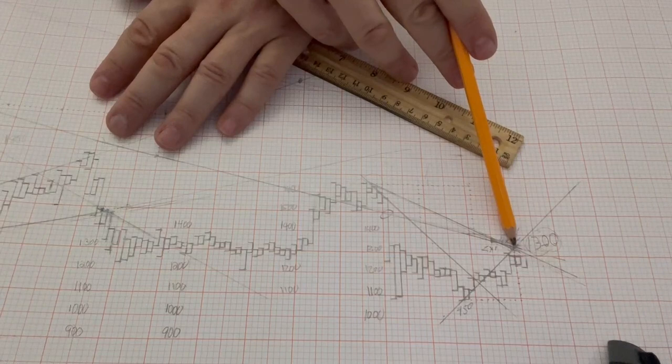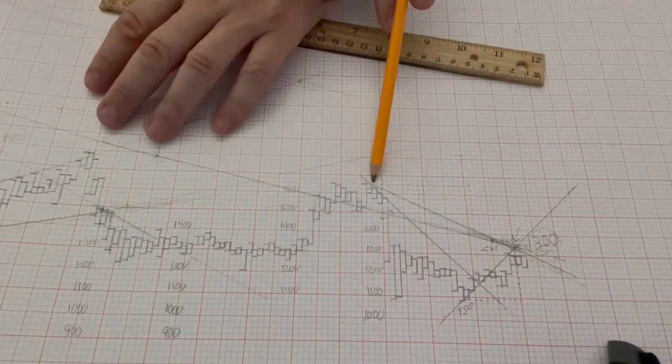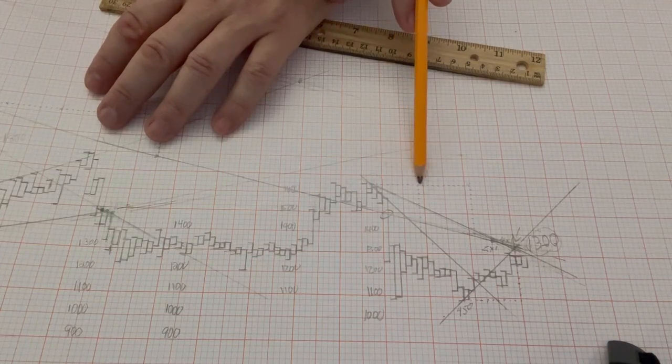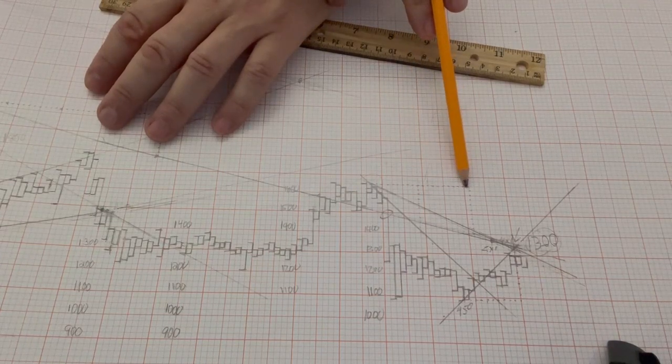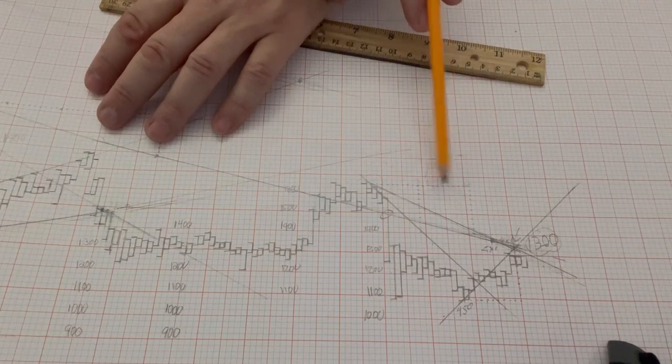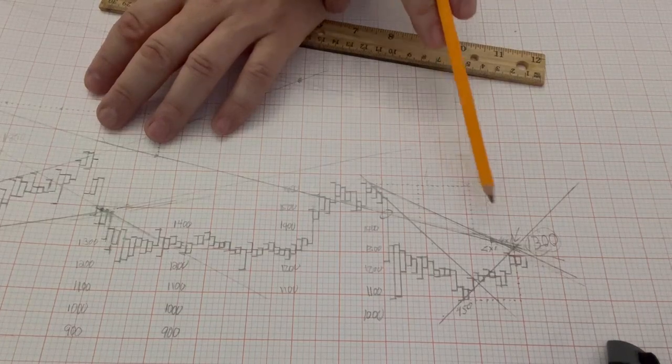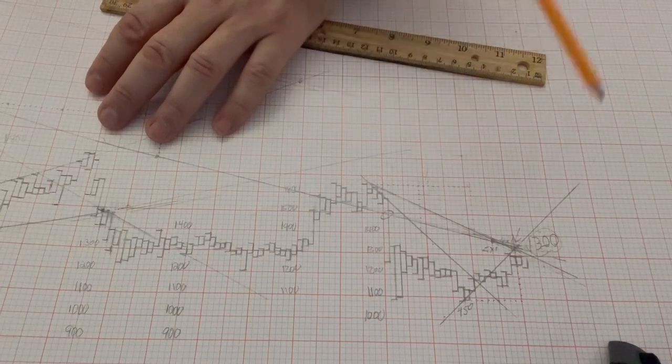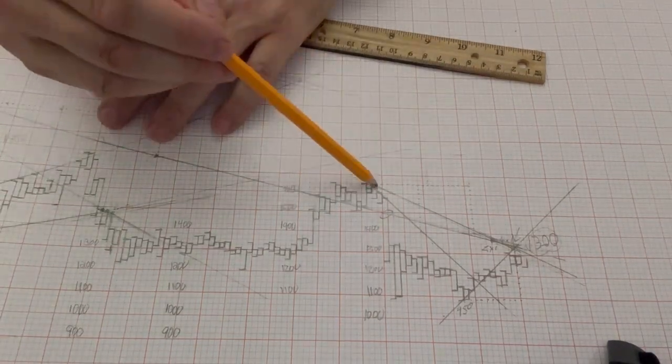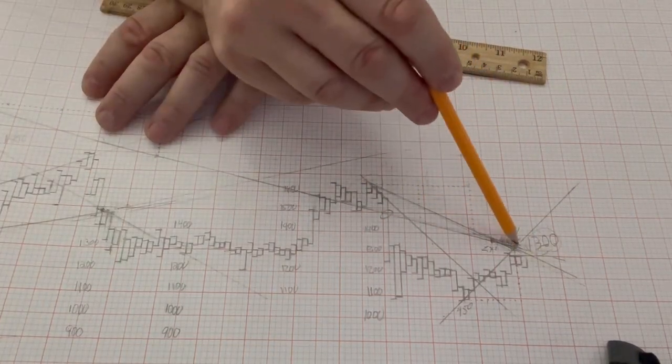Then I did something else. I started at 1600, the recent high, and I drew 10 boxes over and then 10 boxes over again. That's a two by one line, very powerful in Gann analysis. So one, two, that's my two and then one down here. That's the two by one. Draw that line out. Oh wait, look at that. It comes in right at 1300.